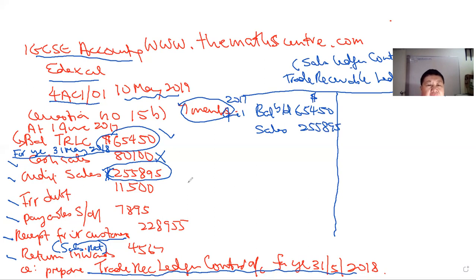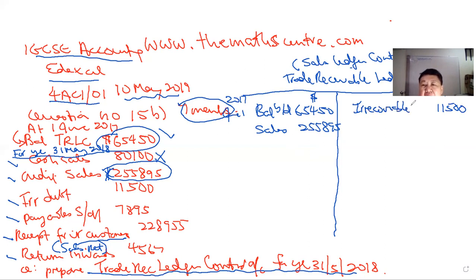Irrecoverable debt: from the amounts owing we are going to write off 11,500 for good as an irrecoverable debt or bad debt. This is an expense and it goes to your income statement. So irrecoverable debt of 11,500 goes on the credit side of the TRLC.